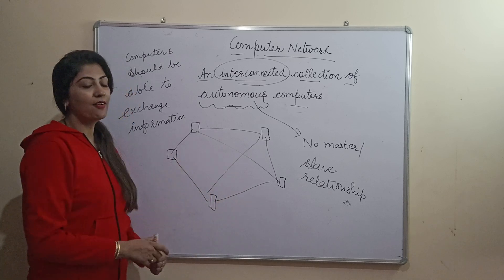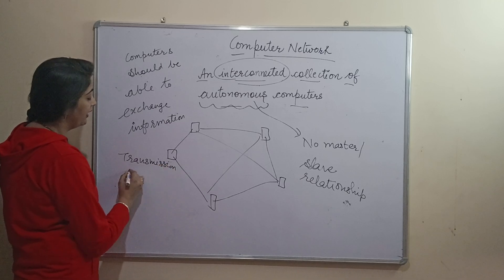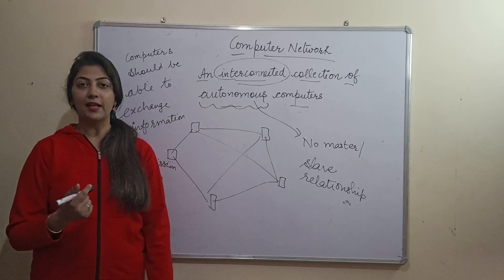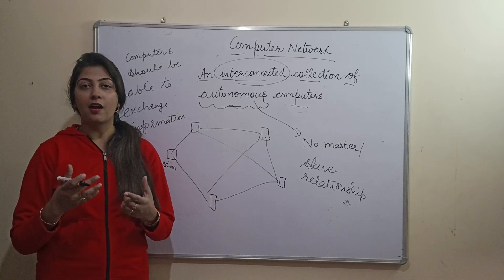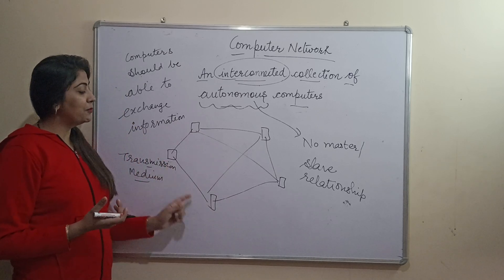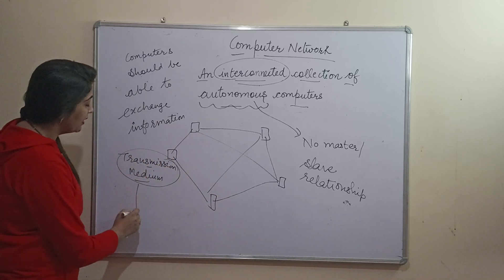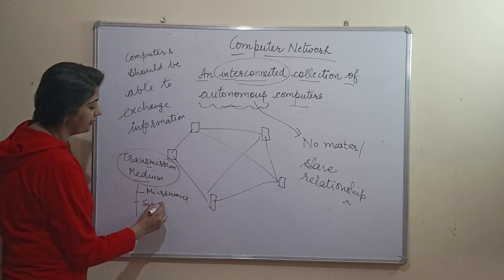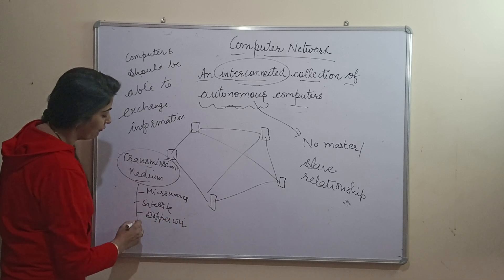But the computers should be connected via some transmission medium. If there is a medium, then you will be able to share information with each other. Just as two people talk together through an air medium — if there is no air medium, they cannot communicate. Similarly, computers are connected with the help of a transmission medium, which can be a microwave, satellite communication, wire communication, copper wire, or fiber optics.